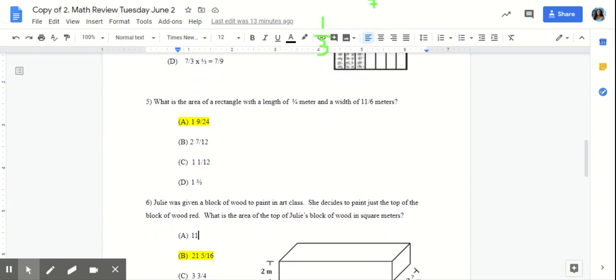Number five, what is the area of a rectangle with a length of three fourths meter and a width of eleven sixths meters? How do we find the area of a rectangle? That's right. We multiply the length and the width. We're going to multiply three fourths times eleven sixths. Three times eleven is thirty three.